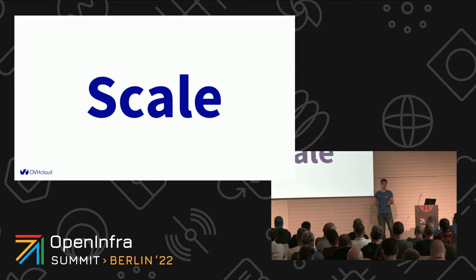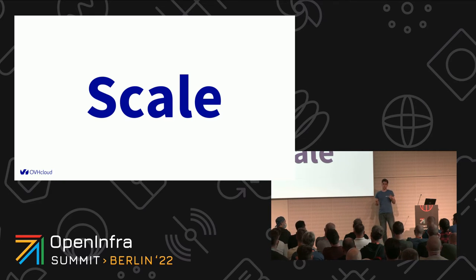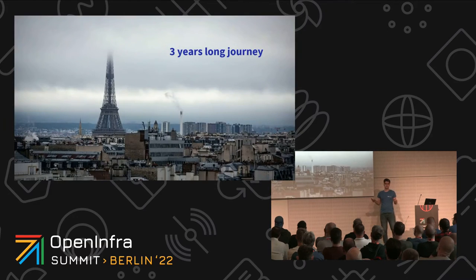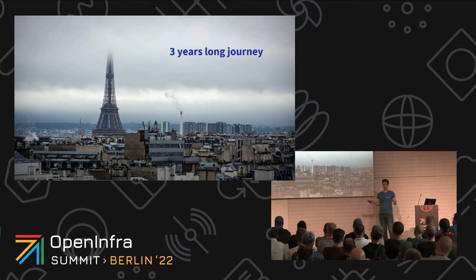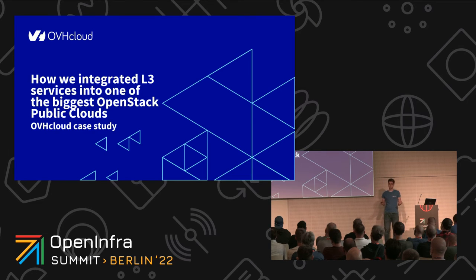This scale gives us a unique view on the challenges, on issues and on problems that we are facing each day, and especially on issues and problems that we faced during our last three years. Last three years was like a journey for us — a journey that led us to a point when we integrated L3 services: distributed virtual routers, floating IPs, and external gateways into one of the biggest OpenStack Clouds.